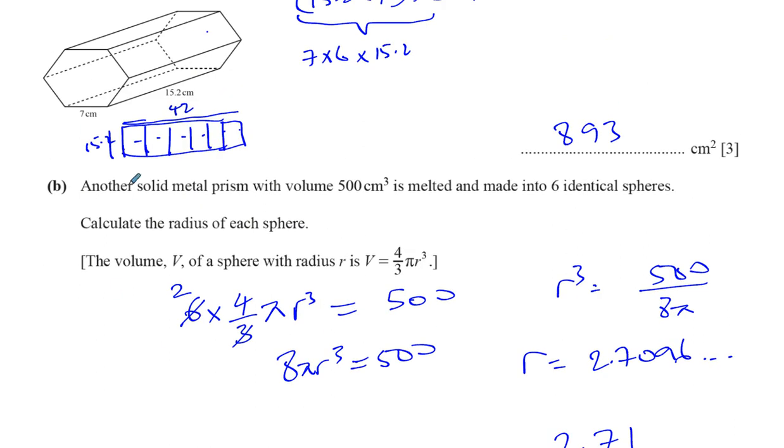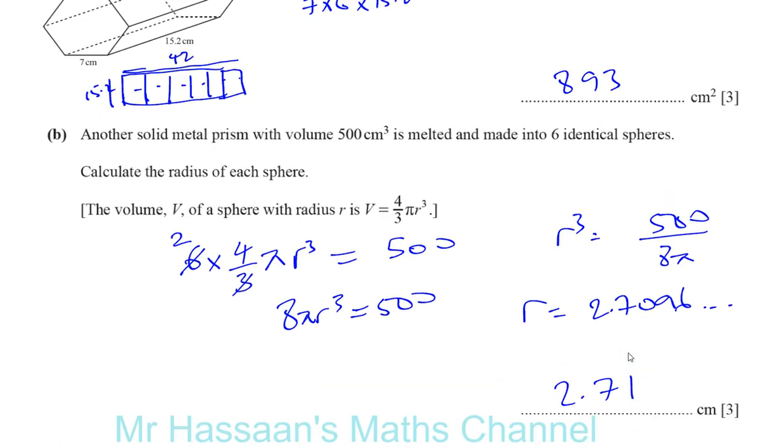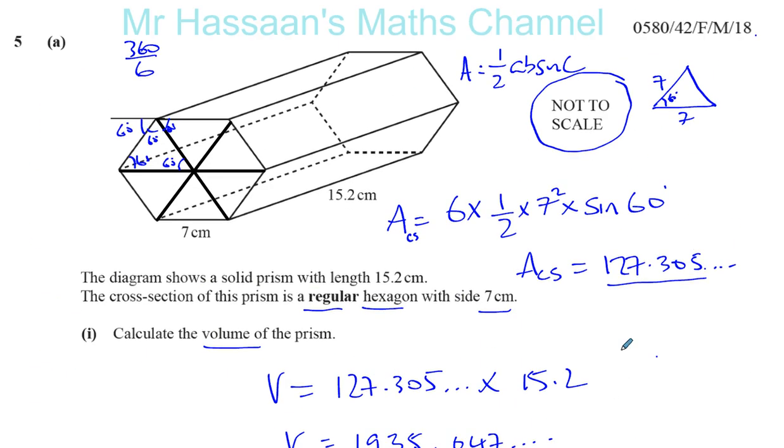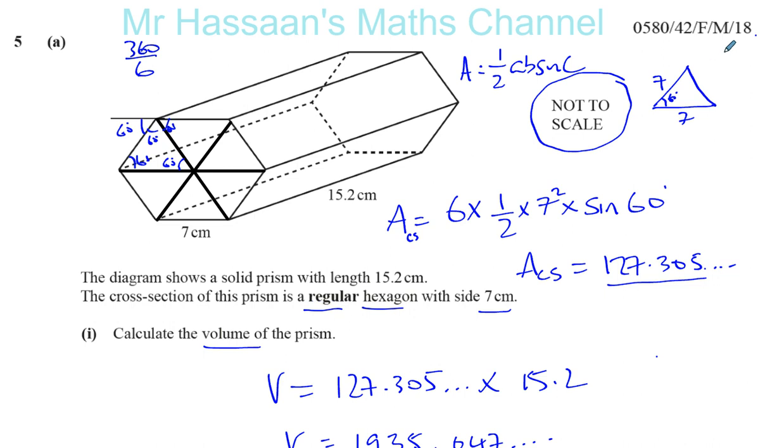There we have it. Just make sure volume is 500. There's six of them. Six times four over three pi r cubed. That's right. So I think that must be correct. So here we have our answers for question number five. And thank you for listening. And have a nice day.